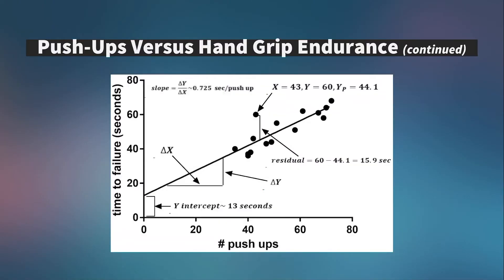Here's what it looks like when we graph push-ups versus hand grip endurance. We see push-ups on the X axis and time to failure on the Y axis. We've plotted a line of best fit through the points — the line that minimizes the deviation or residual between each point and the line. For example, if we want to predict how long someone could hold their grip if they could do 40 push-ups, we look at 40 on the X axis, go up to the line, and read across: about 40 seconds.